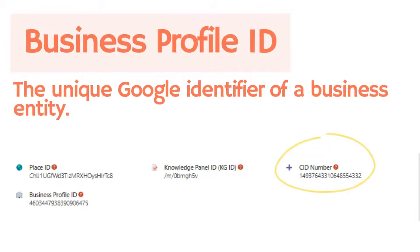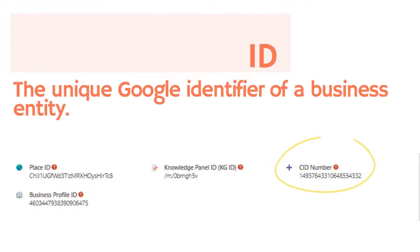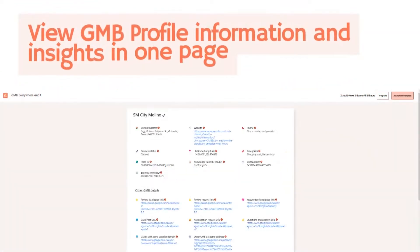And lastly, the business ID — your unique business profile identification — will be used as your identity when reaching Google support for any business profile concerns. With GMB Everywhere, you can view your most needed business profile details and more.